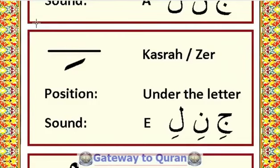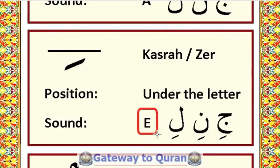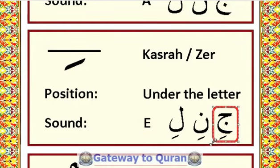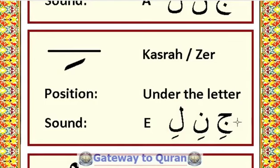Assalamualaikum warahmatullahi wabarakatuh. We were learning about the Arabic vowels. Today we are learning about the Arabic vowel kasra. Kasra is always under the letter and it sounds 'i'. For example: jim kasra = ji, noon kasra = ni, lam kasra = li. Now let's practice this with the help of examples.